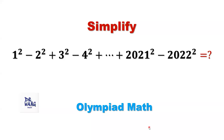Hello everyone, I'm Dr. Wang. Here is the question. We want to simplify 1 squared minus 2 squared plus 3 squared minus 4 squared, plus until 2021 squared minus 2022 squared. There is a pattern.